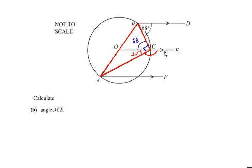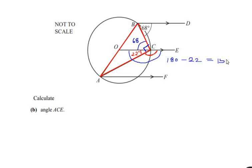Now, OCE is a straight line so it makes an angle of 180 degrees. We have found that the part of angle C was 22 degrees, so we get the remaining part of angle ACE by subtracting 22 degrees from 180 degrees: 180 − 22 = 158 degrees. So we get angle ACE as 158 degrees, by using the property of straight lines.